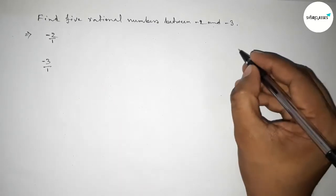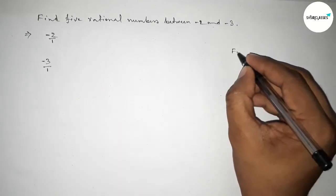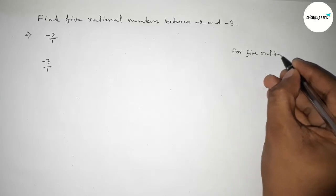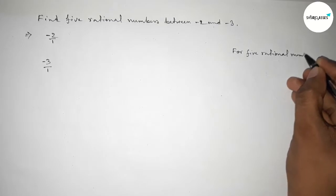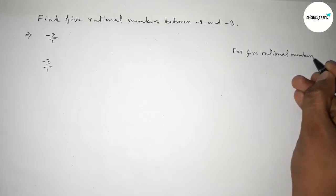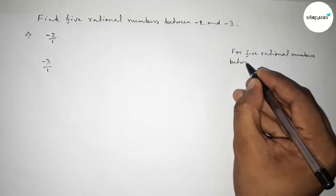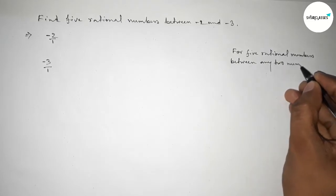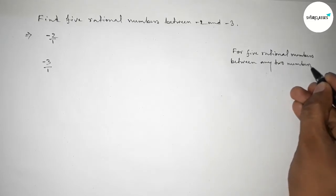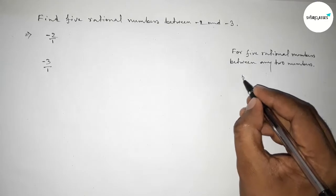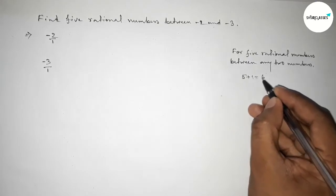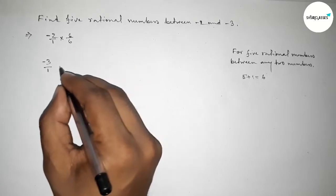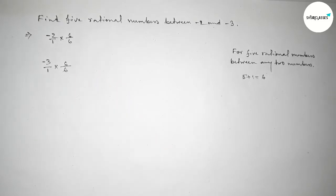Now, discussing here an important method. For finding five rational numbers between any two numbers, we have to follow this method. We have to multiply both numbers by 5 plus 1, which equals 6. So we have to multiply both numbers by 6.